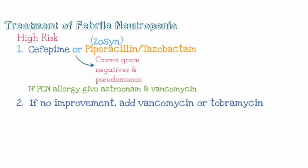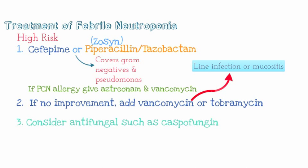If not improving on cefepime or Zosyn alone, consider adding vancomycin or tobramycin. Vancomycin is a purely gram-positive antibiotic and is especially indicated for line infections or mucositis. Tobramycin provides additional pseudomonas coverage — since pseudomonas has a high resistance rate, double coverage using cefepime with tobramycin, or piperacillin-tazobactam with tobramycin, gives better gram-negative and dual pseudomonal coverage. If the patient is still not improving, consider antifungals such as caspofungin.